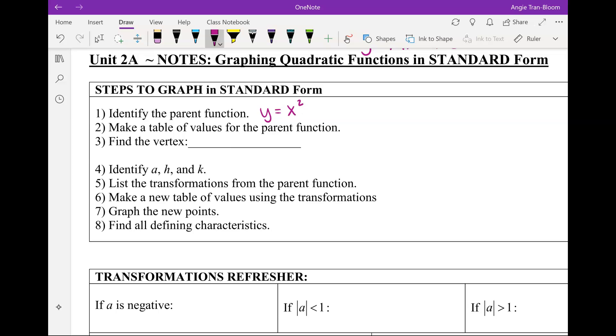Then it says make a table for your parent function. If you remember, we had a table with x and y coordinates, and I gave you five inputs. What were the five inputs? Negative 2, negative 1, 0, 1 and 2. Then you were supposed to find all five outputs for the parent. What are the five outputs again? 4, 1, 0, 1 and 4. Do you guys remember this?